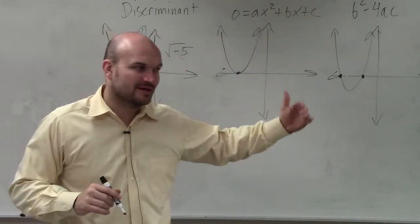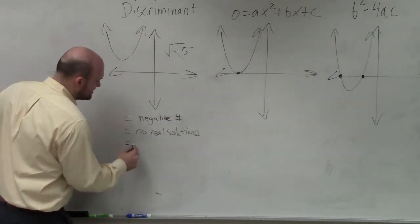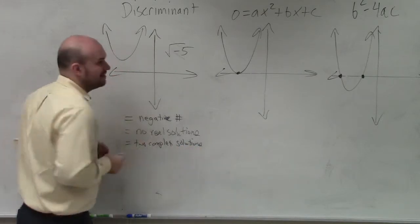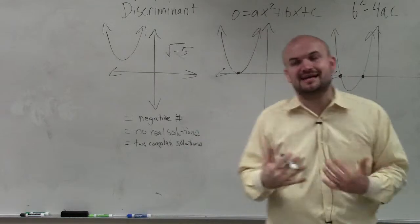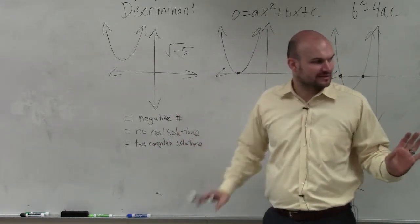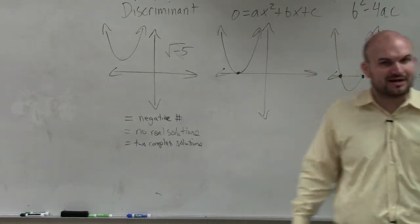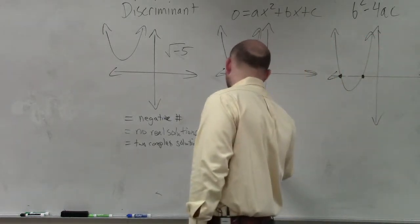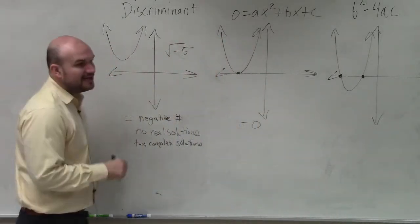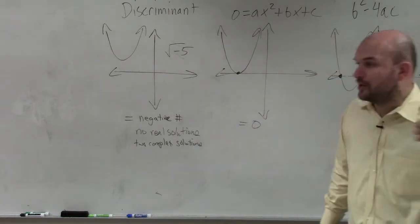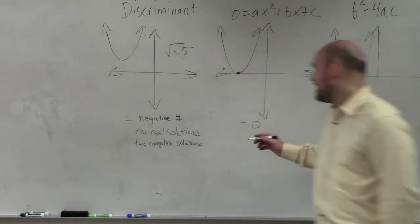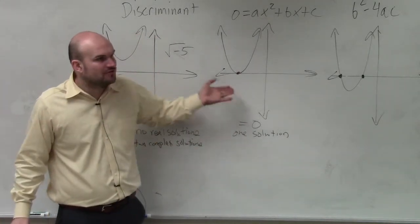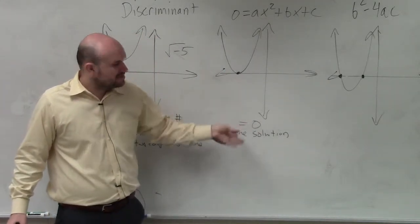Now, for those of you that are going to be moving on for next class period, we are going to talk about this. You could also write two complex solutions. Just so you know, because that's what we will be doing next class period. However, for tonight's homework, you just need to write in no real solutions. If your discriminant is equal to 0, if you do b squared minus 4 times a times c equals 0, then you have only one solution or one x-intercept. And do you guys see that? See how it's possible to only have one x-intercept? So if your discriminant is equal to 0.